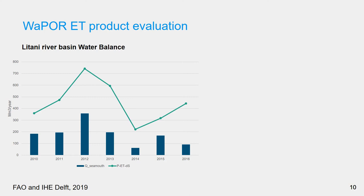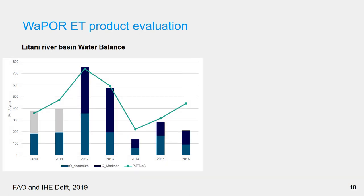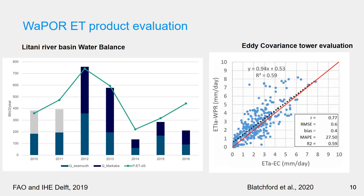Further analysis was done in the Litani river basin in Lebanon, which initially did not show good agreement between the observed discharge and the remote sensing data. However, when including an interbasin transfer, the results are much more encouraging. Blatchford compared the WAPOR ET data with eddy covariance tower data showing good agreement along the 1-to-1 line, but with large scatter.